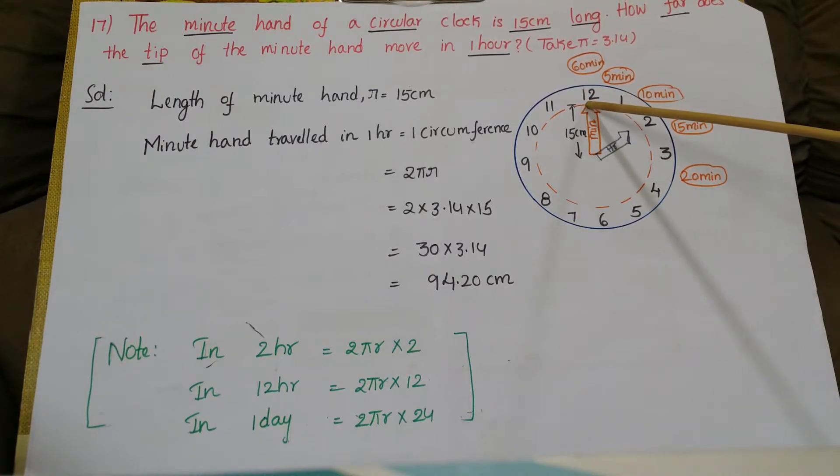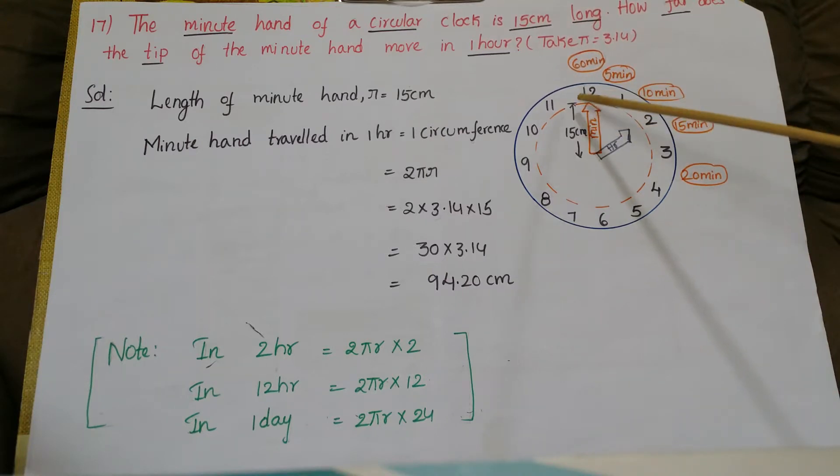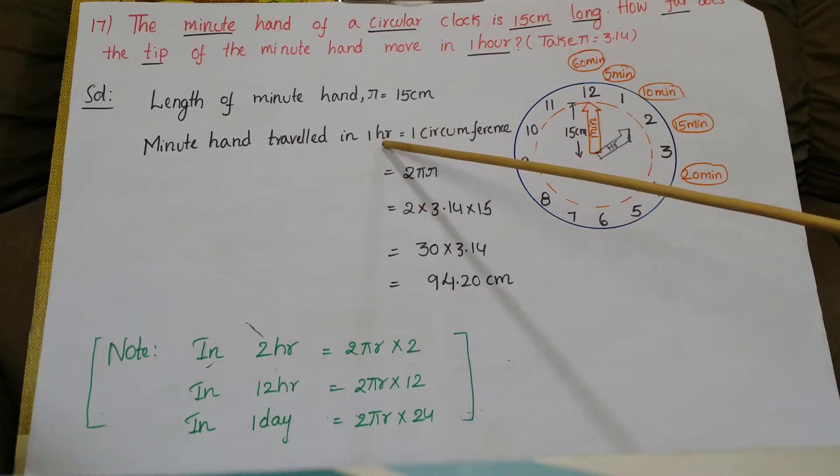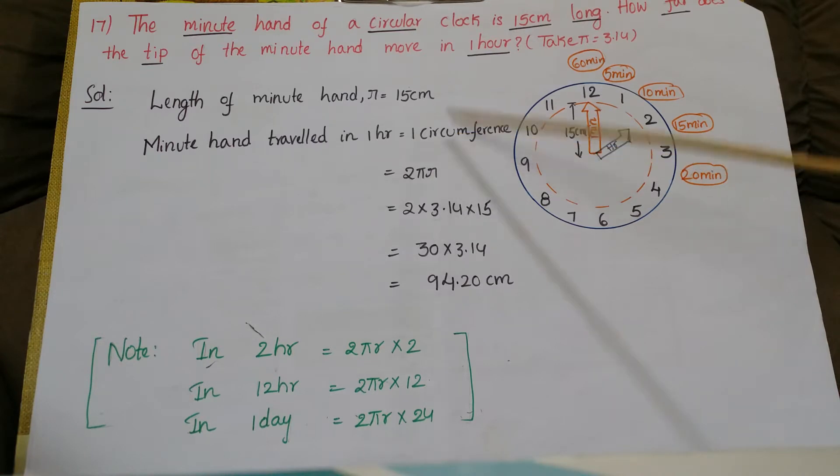So it completes one circle in 60 minutes. So the minute hand completes one circle in 60 minutes, so that is nothing but circumference of the circle. So minute hand traveled in one hour is one circumference, that is 2πr.